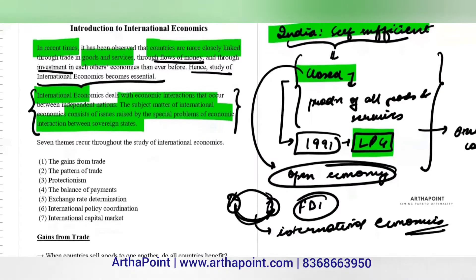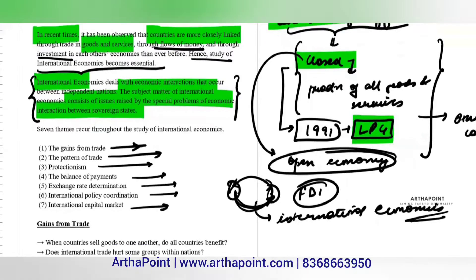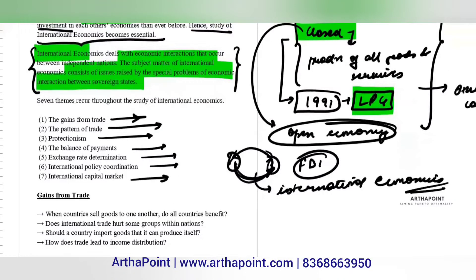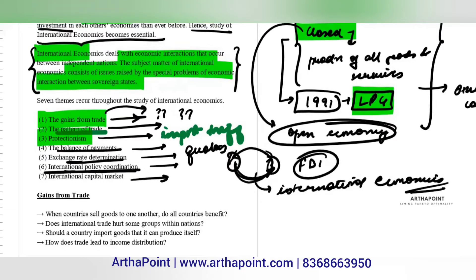Through this course on international economics, we are going to cover seven themes in detail. We will understand the gains from trade — what is gain from trade, who gains, who loses. We will look at patterns of trade, protectionism, and strategies like import tariffs and quotas. We will also cover balance of payments, how to determine exchange rates, international policy coordination, and finally the international capital market.